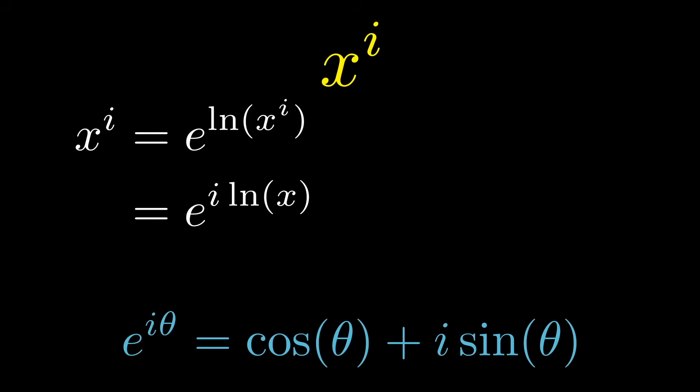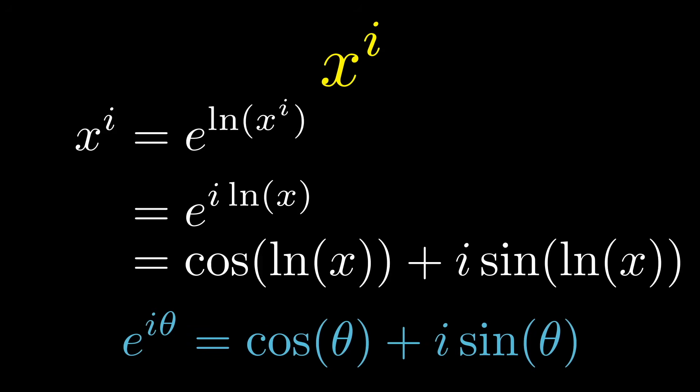Insert an e to the ln, and drop down the i using that good old property of exponents. Now here we're going to break out Euler's formula: e^(iθ) is cos(θ) + i sin(θ). And in this case, θ is natural log x. So we have x^i is cos(ln x) + i sin(ln x).